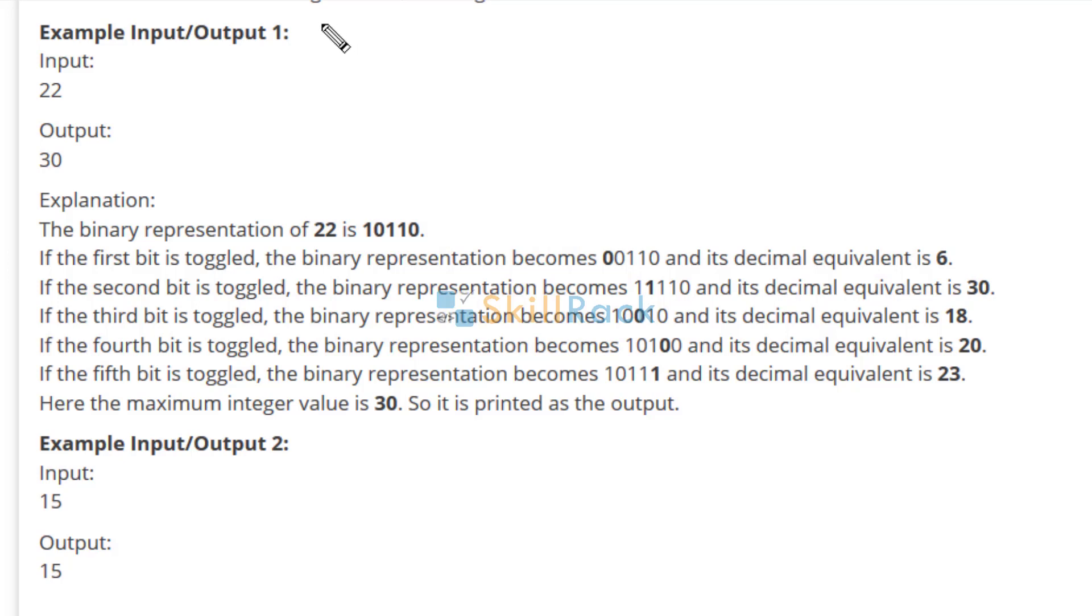First we will accept n as the input. So n is 22. We will have an array to represent the value in binary representation. So initially we find the remainder when dividing by 2. The remainder is 0, so it goes here. Then it becomes 11, the remainder is 1, so it goes here.